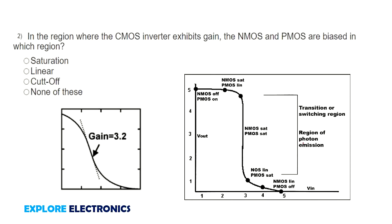Next question: in the region where the CMOS inverter exhibits gain, the NMOS and PMOS are biased in which region? When NMOS and PMOS transistors are biased in the saturation region, we can expect gain. In saturation region it will act as an amplifier. You can observe the slope here — both NMOS as well as PMOS will be in saturation region.